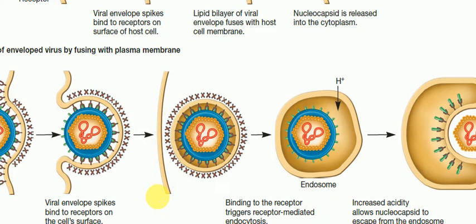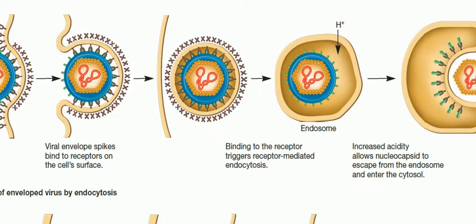The spikes bind, signaling proteins come to the envelope or membrane, and the membrane buds inside. Once budded inside, the receptors are ready and the inbuilt process works for disease transmission.